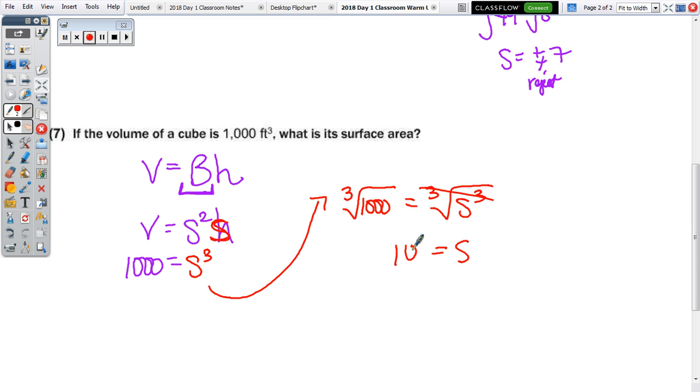And the surface area now, surface area we just did above, is 6 times 10 squared. Because each square, it's a 10 by 10. So the area of one square is 100. So 6 times 100 is 600, and our unit is square feet.